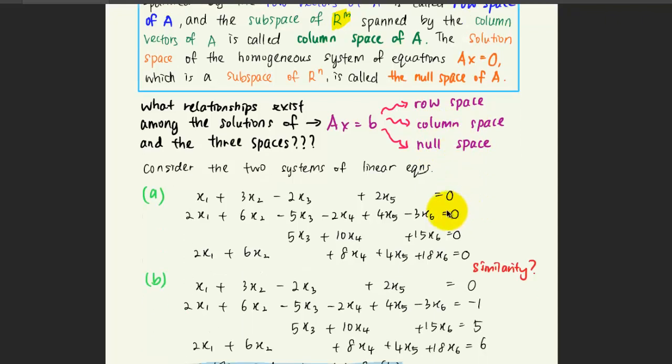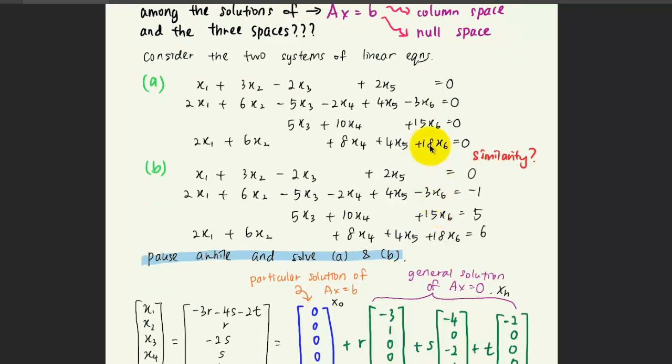Now let's consider the two systems of linear equations here. The first one is given in this form, and the second one is given in this form. The similarity between both systems of linear equations is actually on the left-hand side. The equations are the same. It's just that the constants on the right-hand side are different. So for the first case, case A here,